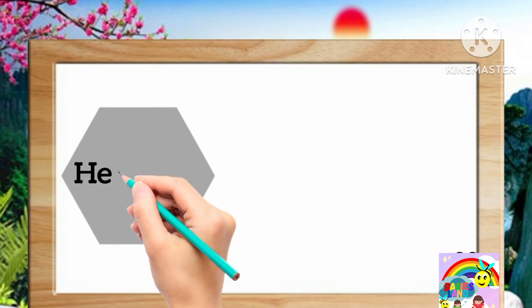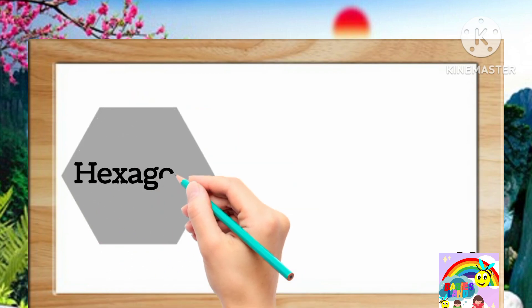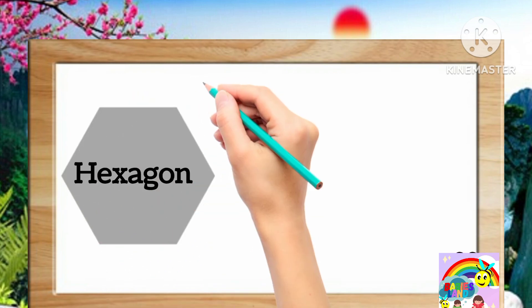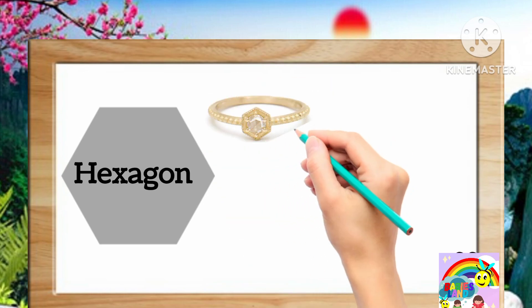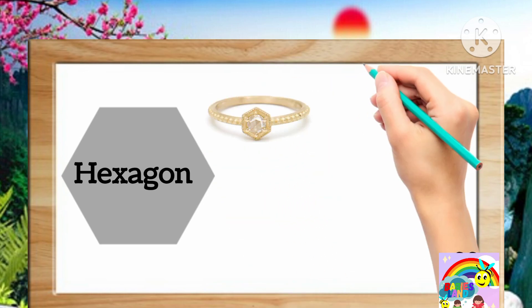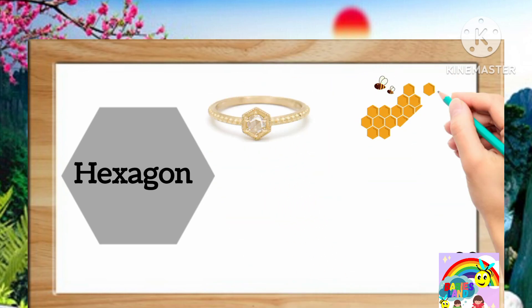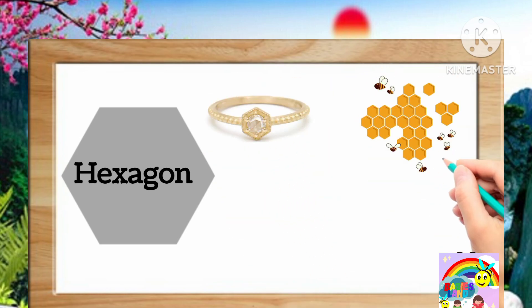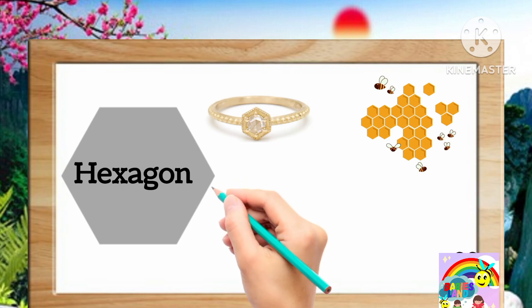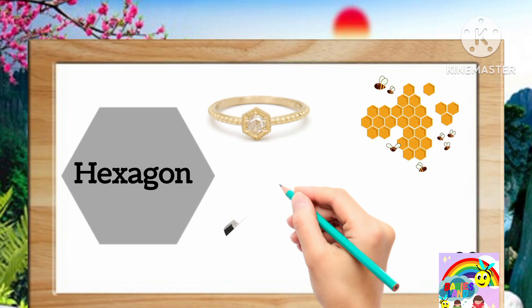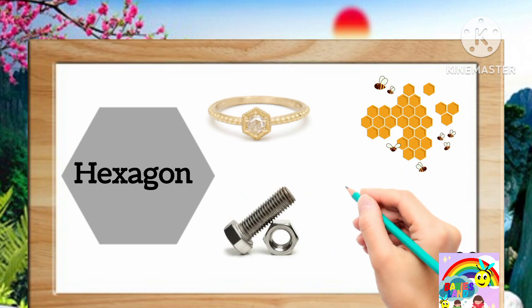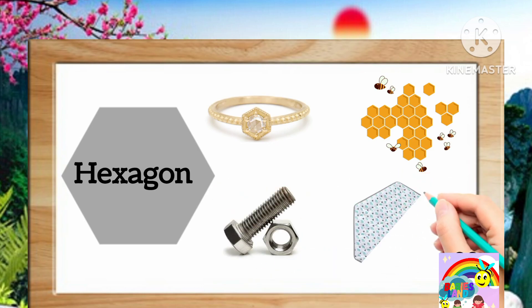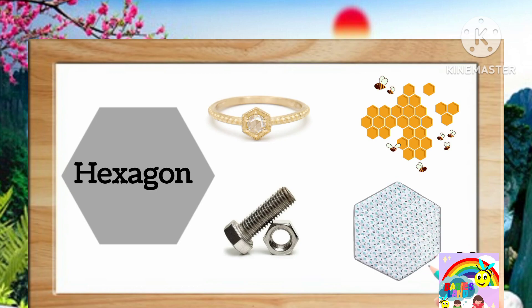Next one is hexagon. Examples are ring, beehive, nut and bolt, hexagon shape mat.